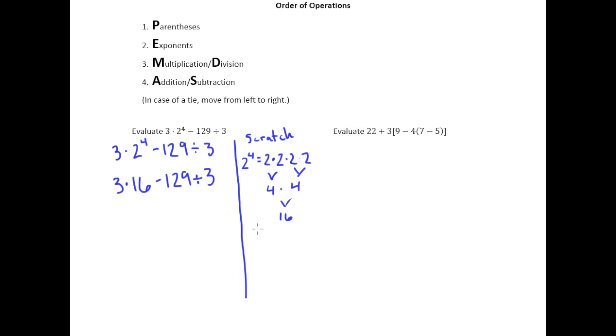So in your scratch work over here you can say okay I'm going to figure out 16 times 3 and that's going to give me 48. And then you can also take 129 divide it by 3. 3 goes into 12 four times, drop the 9, 3 goes into 9 three times.